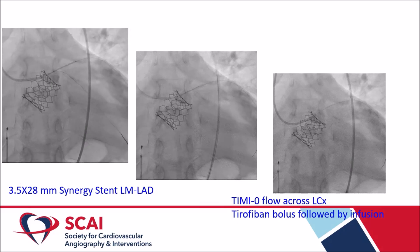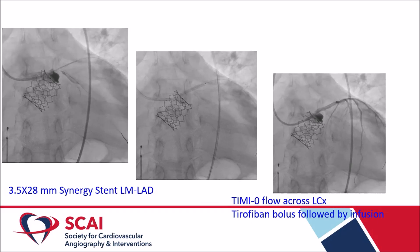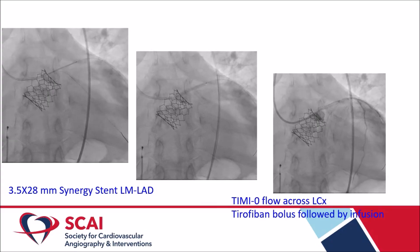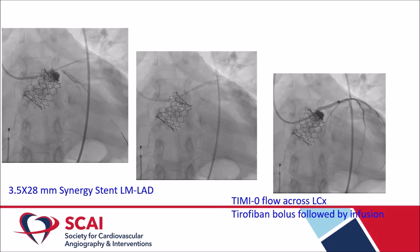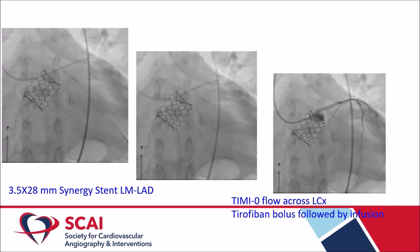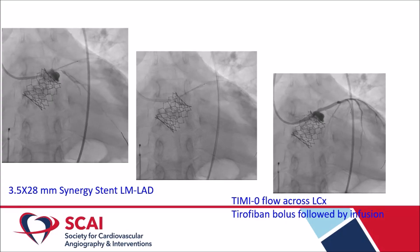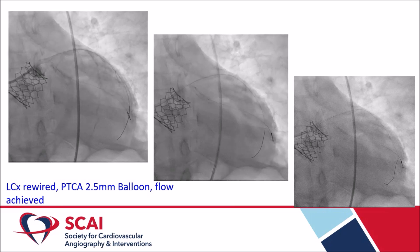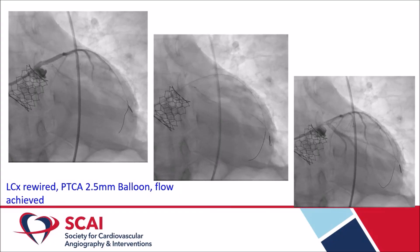A 2.5 mm balloon dilation was performed, followed by stenting with a 3.5×20 mm Synergy stent across the LCX ostium. However, there was again no flow across the LCX and no flow across the left system. A 3.5×28 mm Synergy stent was deployed as a chimney stent from the TAVI valve to the LAD. Flow across the LCX was still absent.